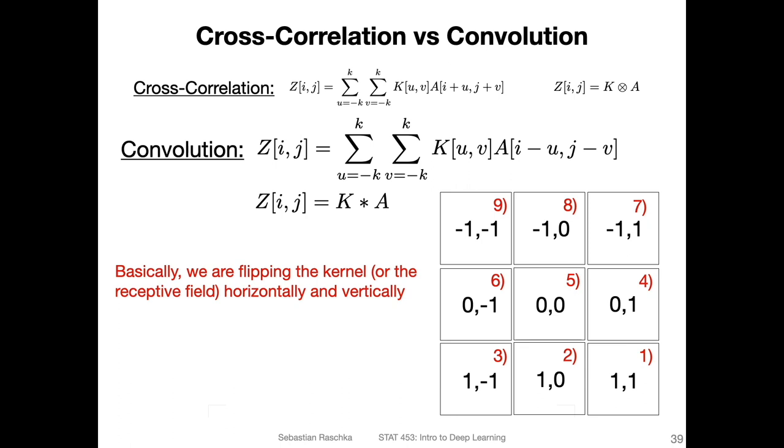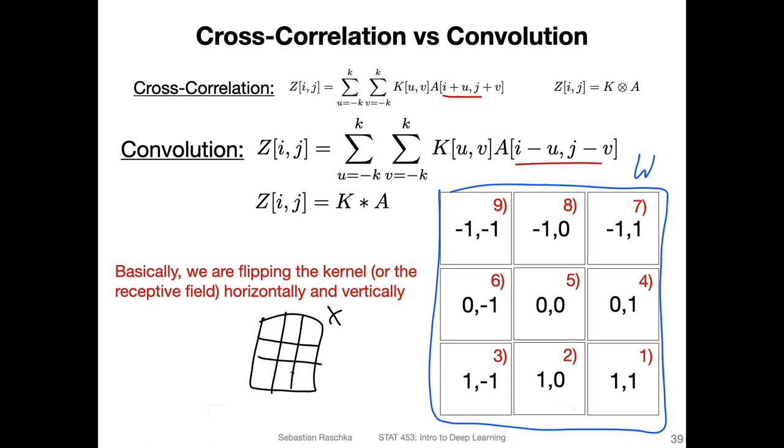But you can also do it the other way around. This is known as convolution. Notice the only difference is that I'm flipping some signs. It's probably hard to stare at this equation, but it's pretty easy to see it here in this image. We have still the same order in x, but now we multiply this one with the first position, and then this one with the second one, and so forth.